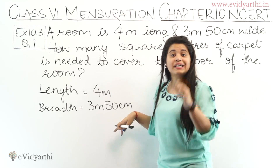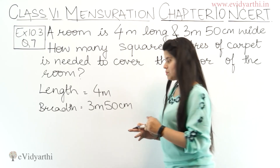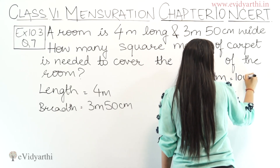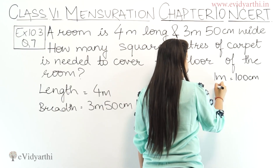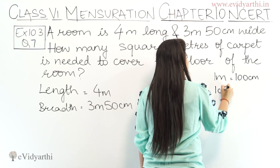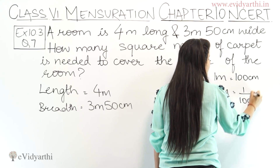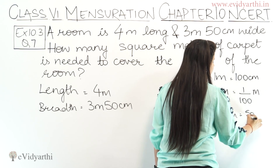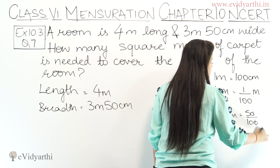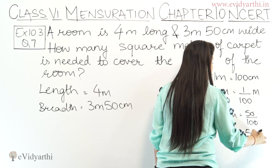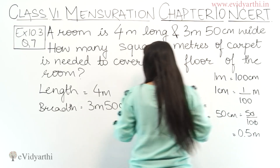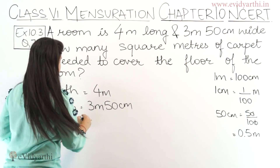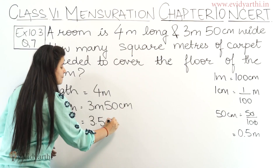Why? Because ye 50 centimeters hai, hame ye poora meters mein chahiye. So 1 meter equals 100 centimeters. Now 1 centimeter equals 1 upon 100 meters. So 50 centimeters ho gaya 50 upon 100 — zero se zero cancel — this will be 0.5 meters. So ye aapke hai 0.5 meter.